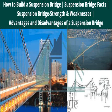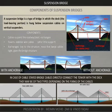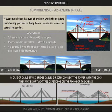Early British chain bridges included the Dryburgh Abbey Bridge. The first important modern suspension bridge and the first chain bridge in German-speaking territories was the chain bridge in Nuremberg. The Clifton Suspension Bridge is one of the longest of the parabolic arc chain type.